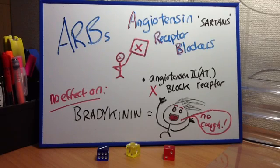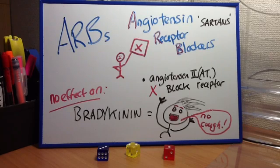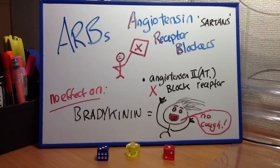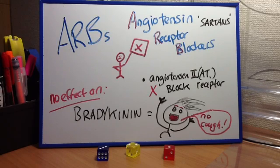Side effects: hyperkalemia, renal failure in renally insufficient patients, hypotension, teratogenicity — may cause fetal renal damage if used during pregnancy — and rash. We've heard this before. However, note that unlike the ACE inhibitors, the ARBs have no effect on the metabolism of bradykinin, nor are they associated with a cough or the development of angioedema. Both of these side effects are believed to be related to elevated levels of bradykinin, and this is because it works farther down the line than ACE inhibitors.